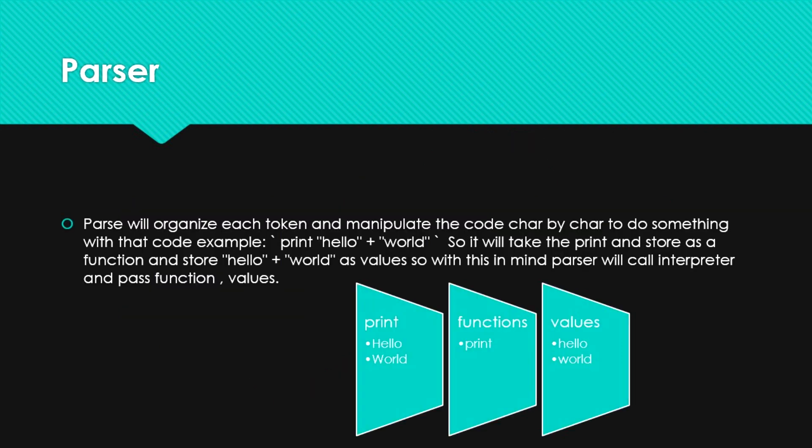The parser reorganizes each token and evaluates the code character by character to do something with that code. For example, 'print hello plus word' — it will take 'print' and mark it as a function, and 'hello plus word' as values. So with this in mind, you pass functions and values to the interpreter.